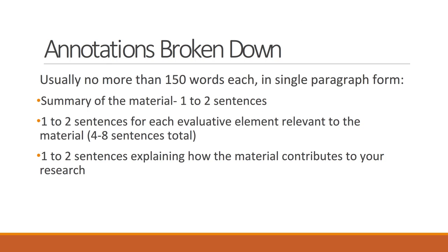To summarize, each annotation will include your source's citation directly followed by the annotation, which is usually no more than 150 words each in a single paragraph. Annotations consist of a summary of the material in one to two sentences, and then one to two sentences for each evaluative element relevant to the material being evaluated — usually four to eight sentences in total. The final portion of the annotation, one to two sentences, should focus on explaining how the material contributes specifically to your research: what specific things are you learning from this paper that will directly correlate with your research endeavor?